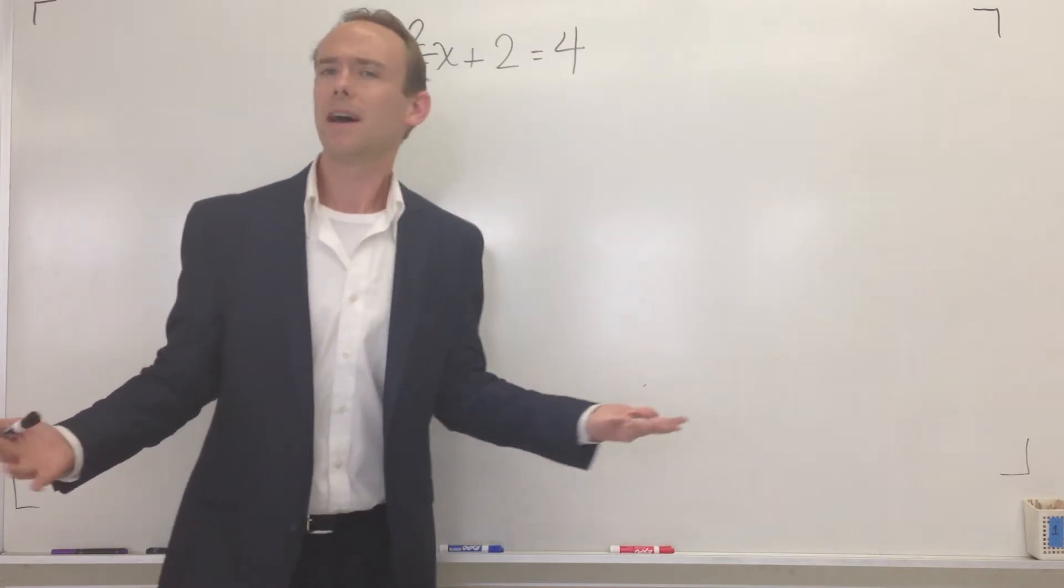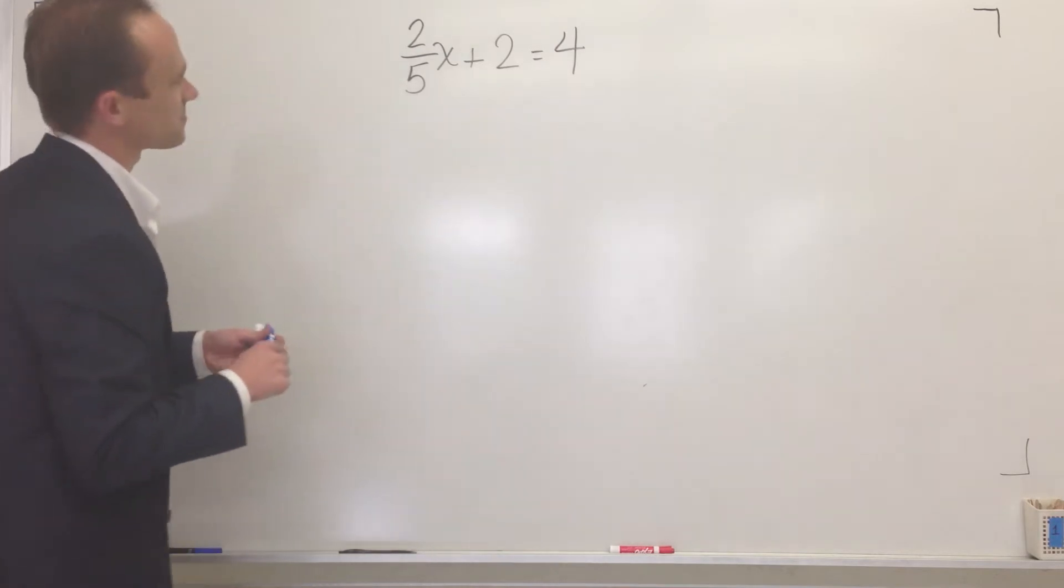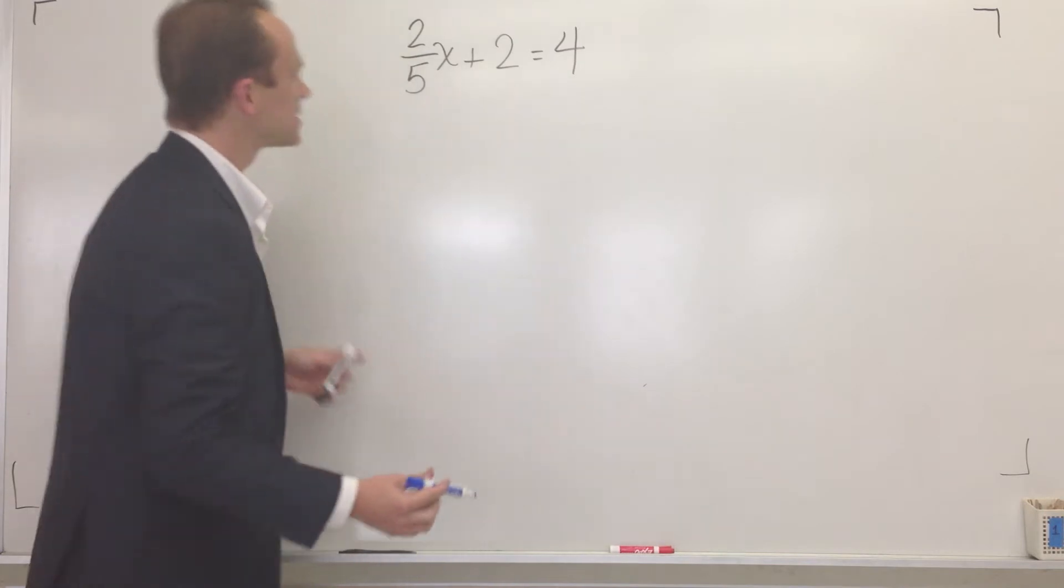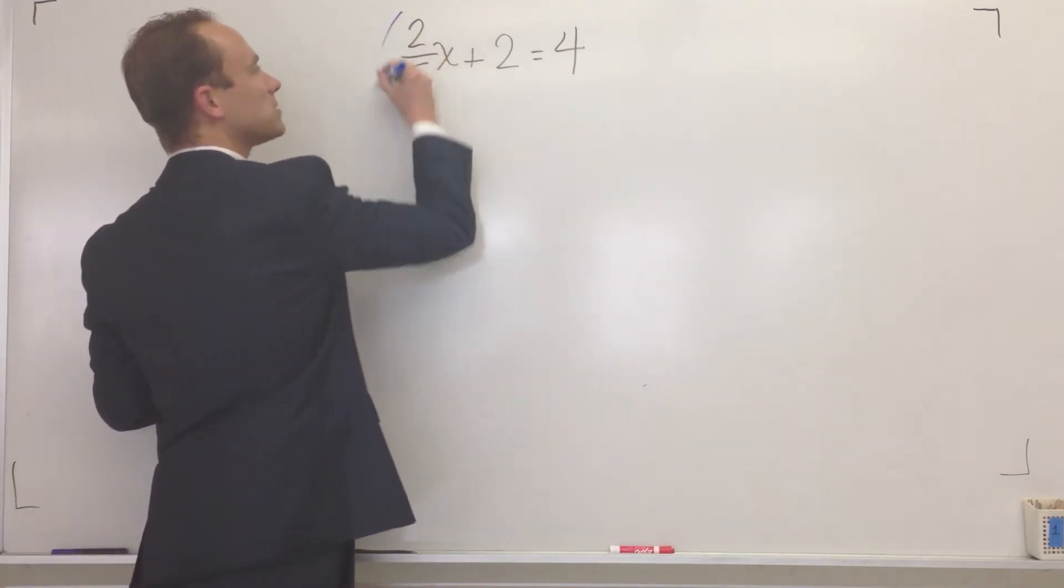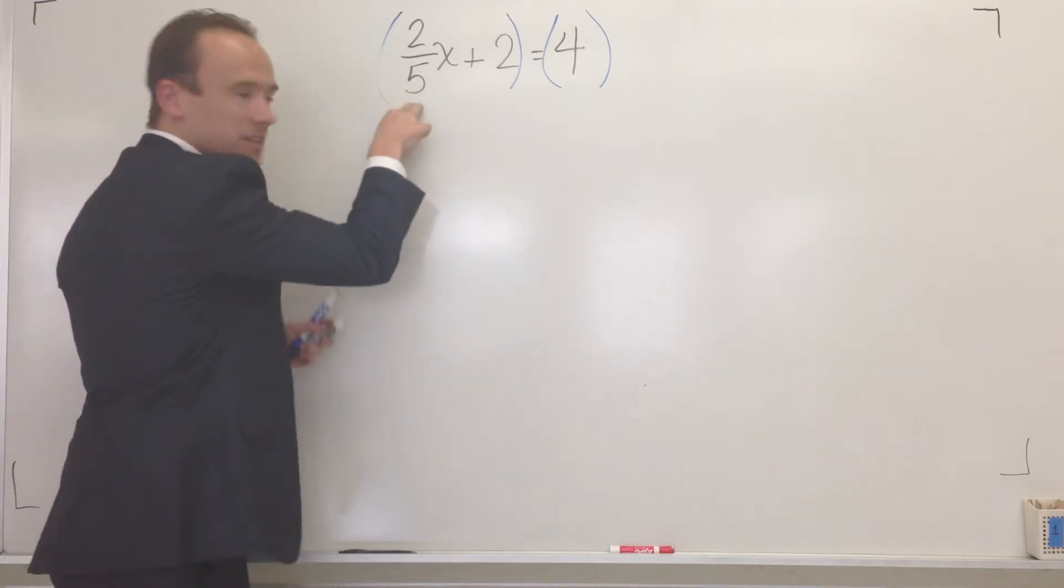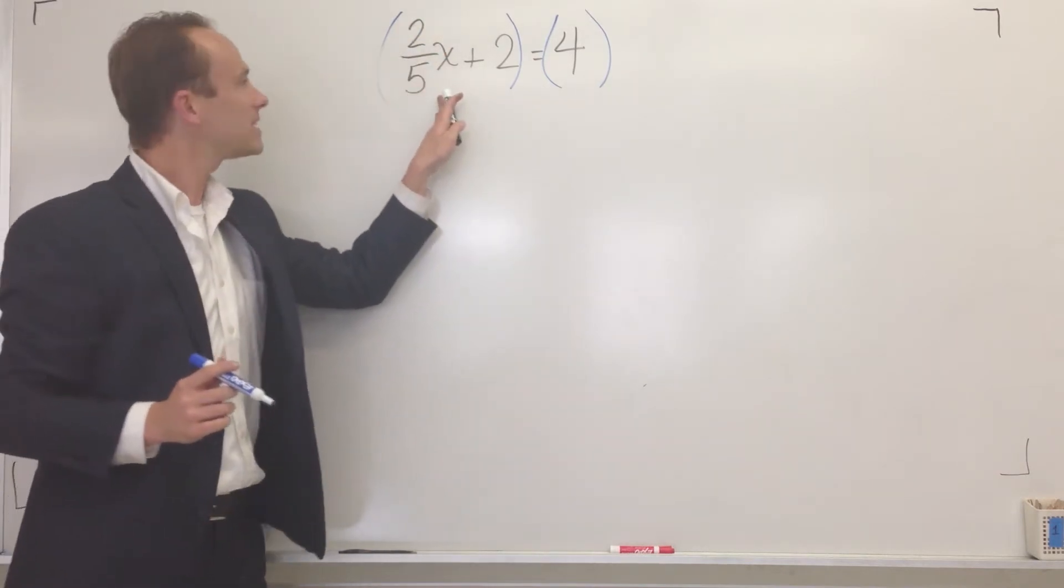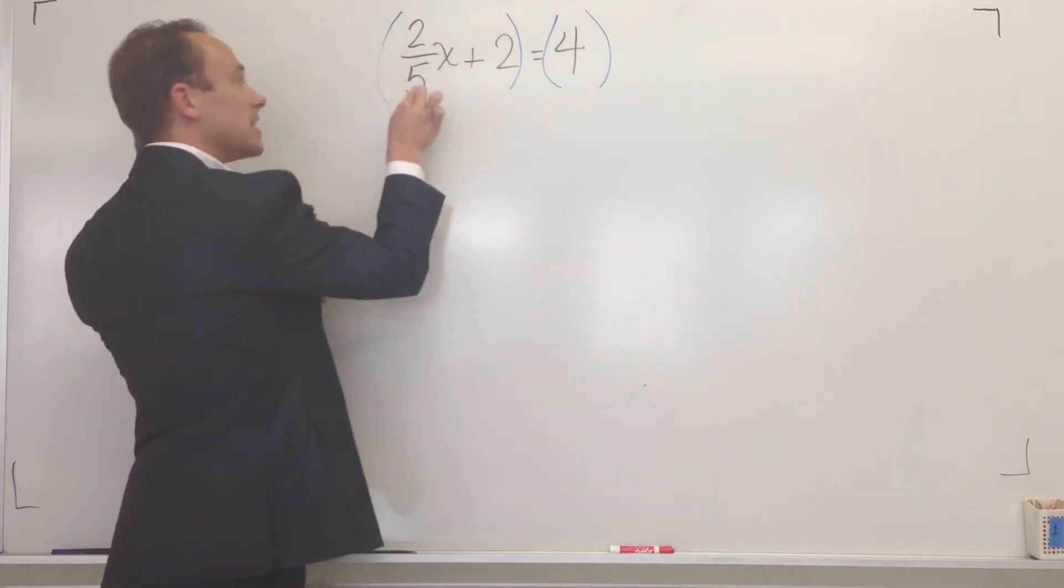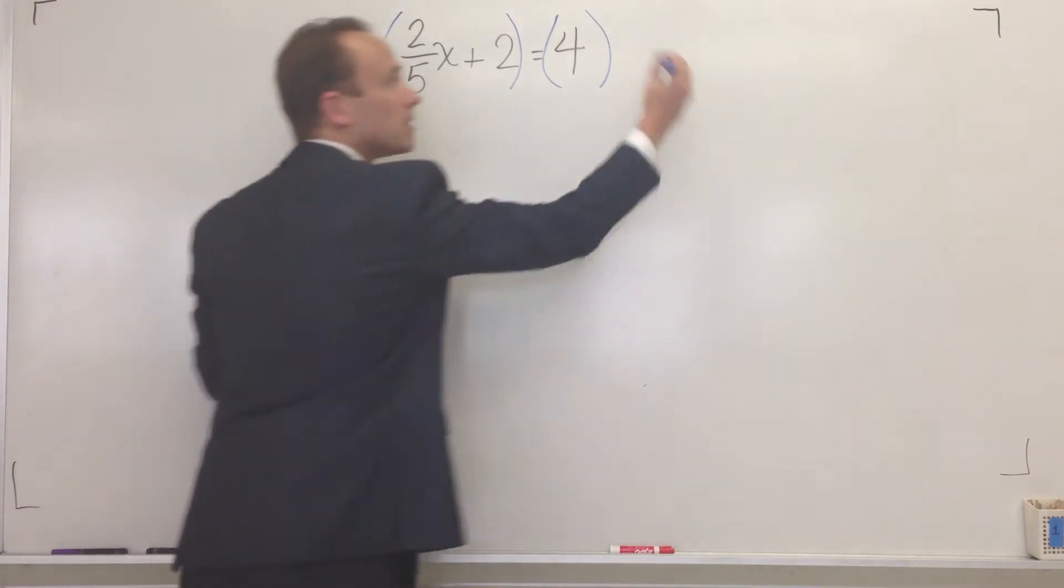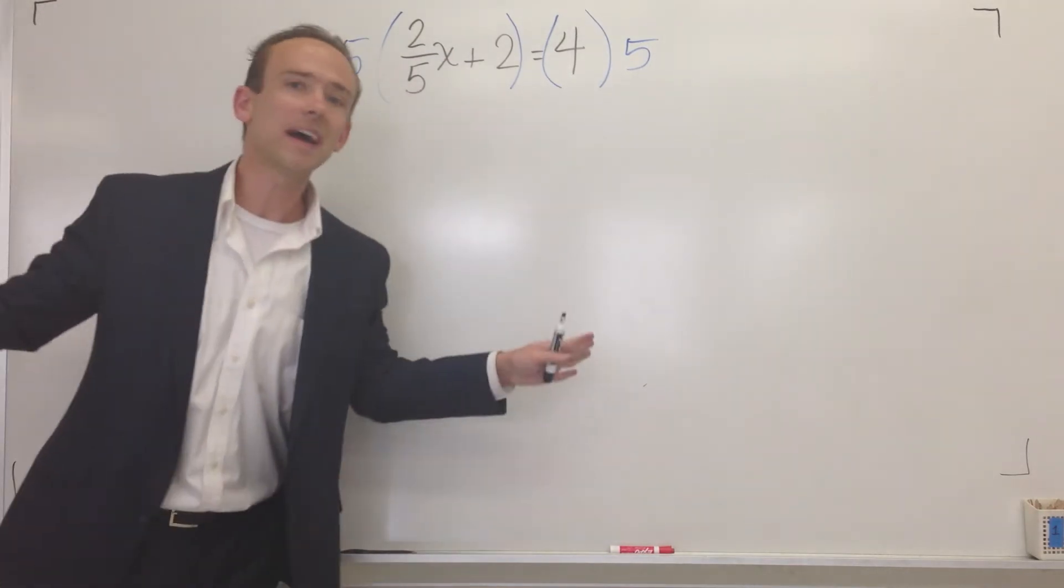So, how do you blow up a fraction? Let me show you. All you got to do when you have fractions is multiply both sides of the equation by a number that will get rid of the fraction. And the number that will do that is any number that would divide it evenly. Like for instance, if that's a five, you want to blow up a five? Boom. Throw a five on each side.